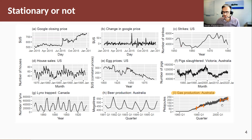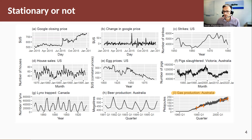In the bottom corner we have gas production in Australia — a time series that is non-stationary in every possible way. It is heteroscedastic: the variance increases as the level of the series increases. It also has a trend and a seasonal component.